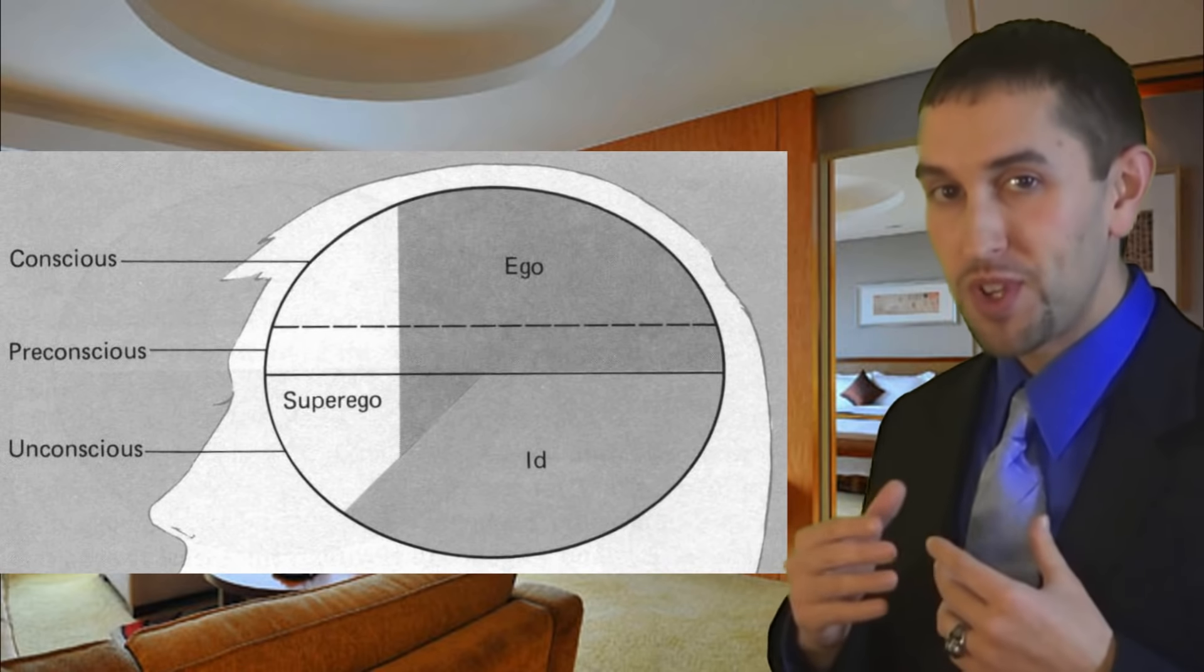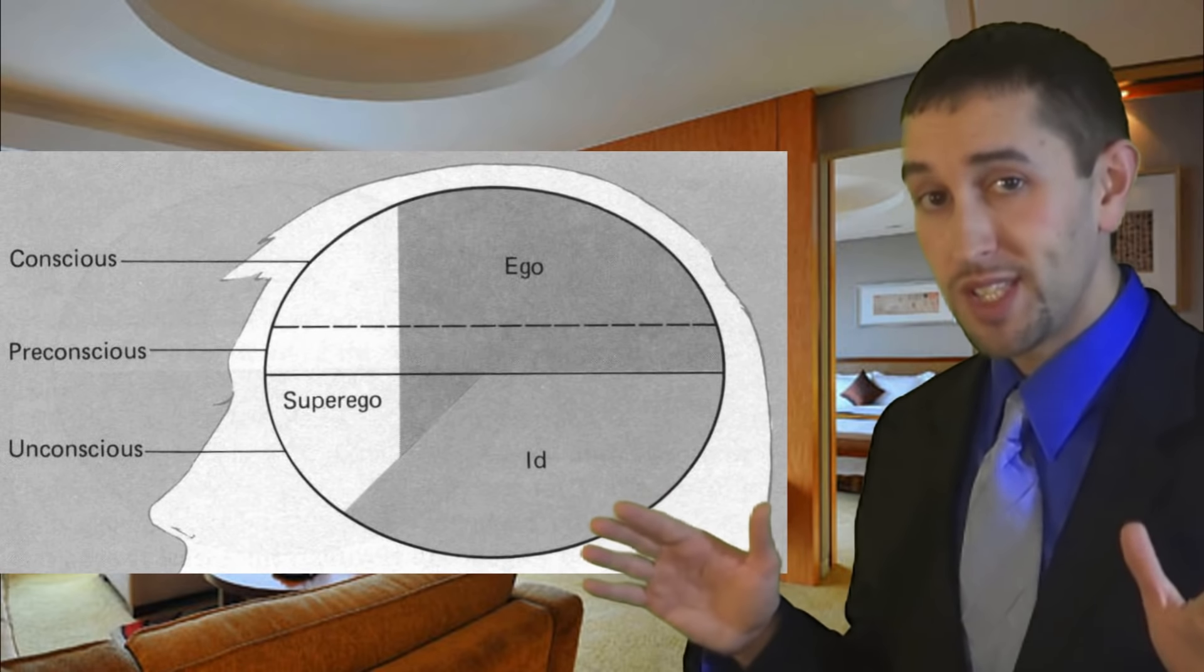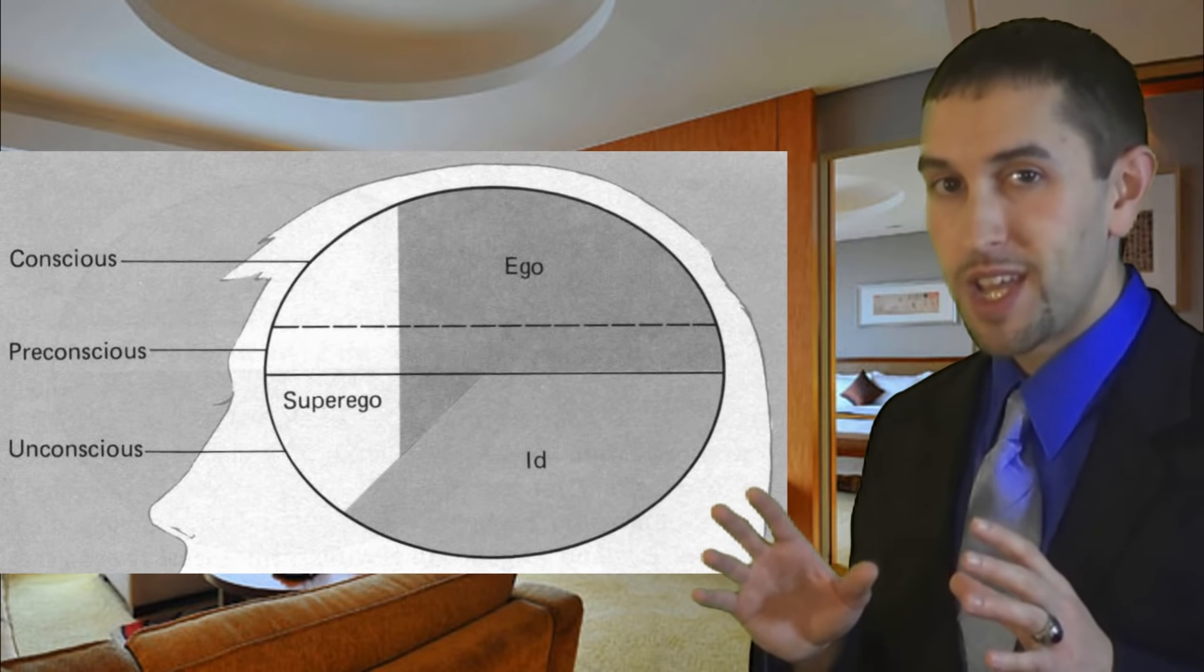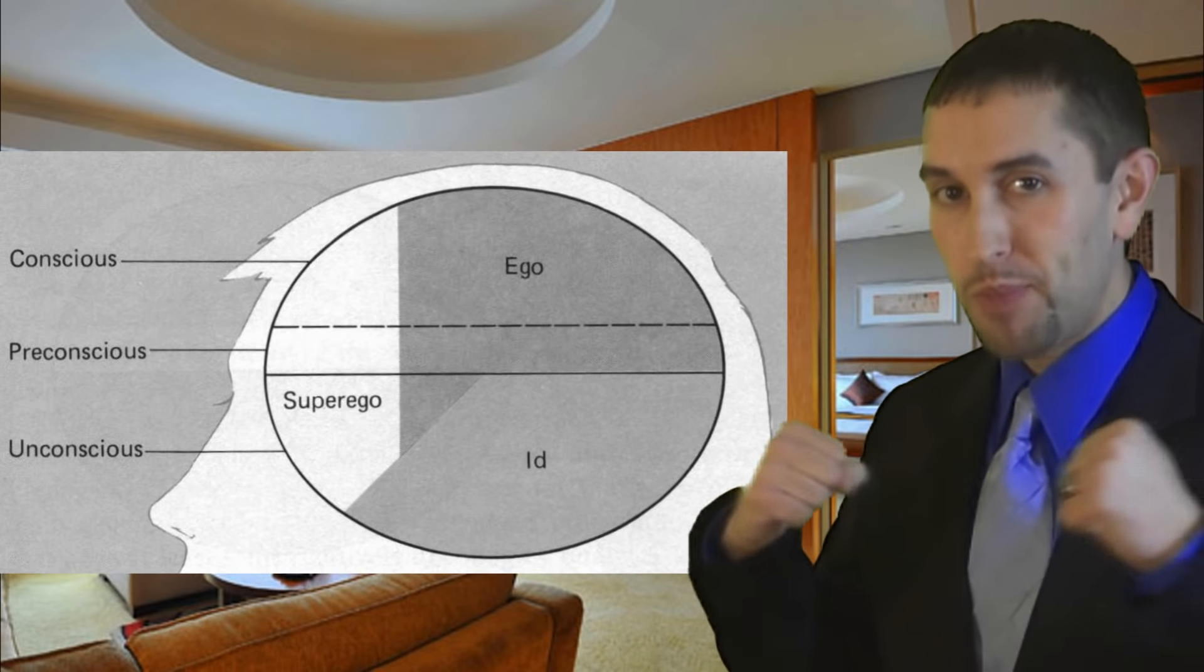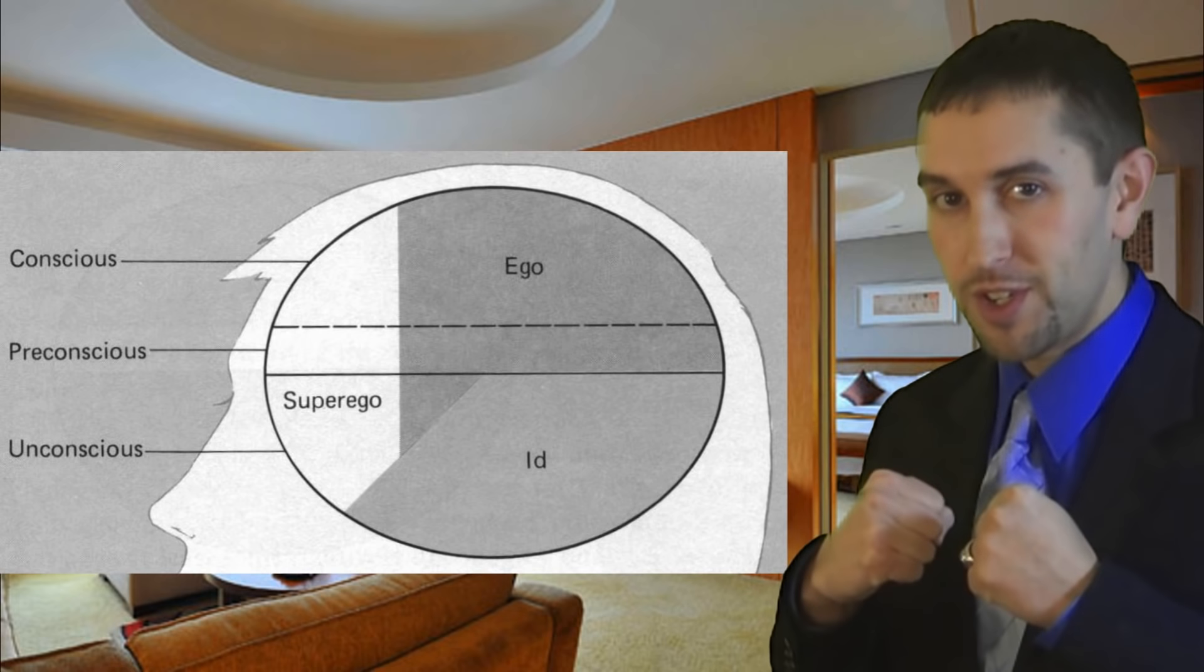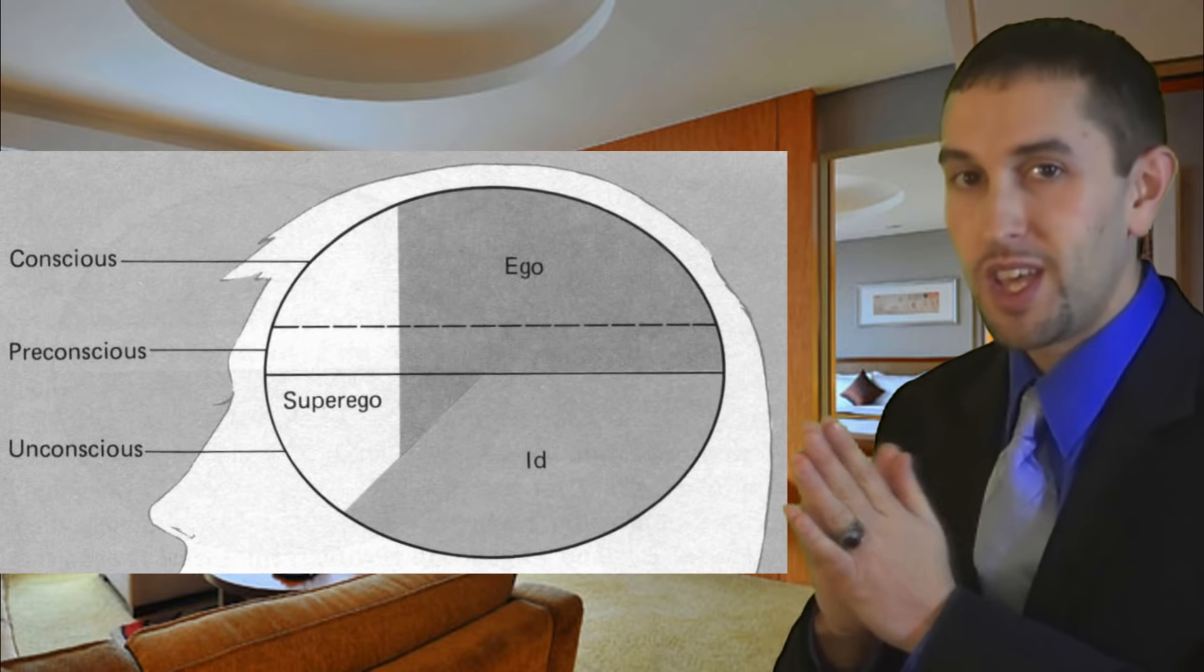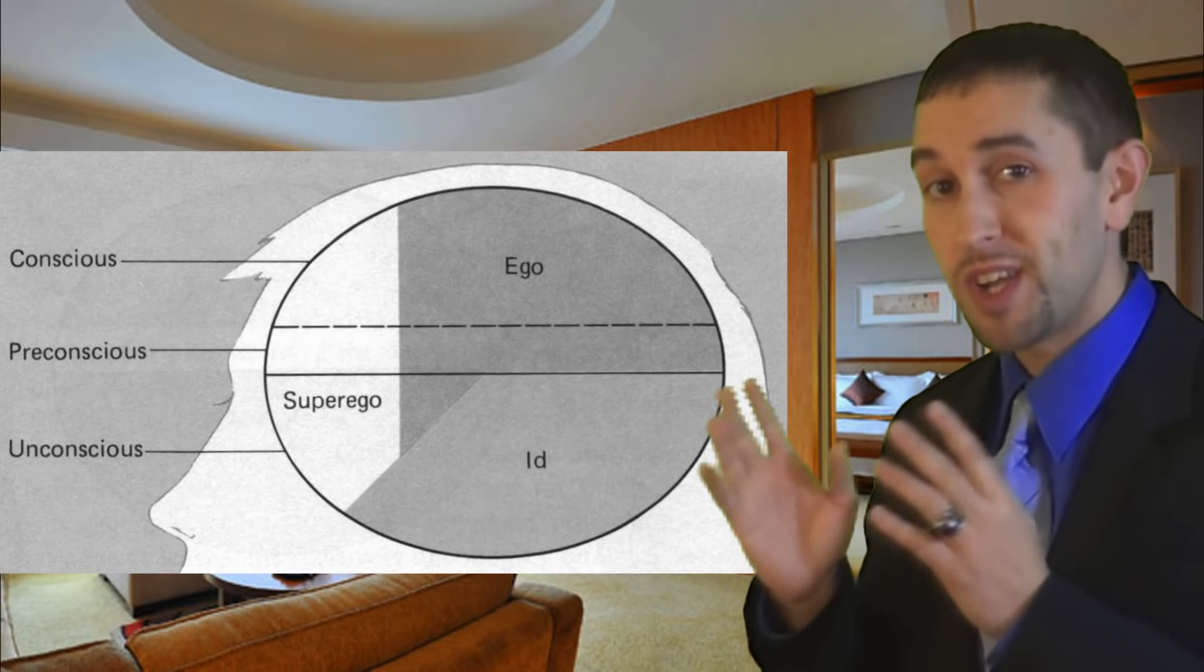Like the id, the superego thinks nothing about what is realistic. It wants moral perfection. The id and superego are always battling each other to control behavior. So the ego's main job is to mediate between these two. It chooses which one gets to express itself.